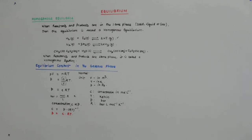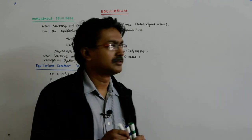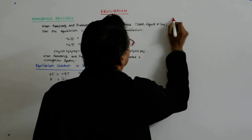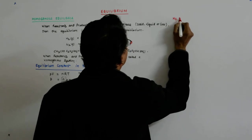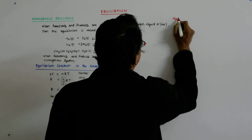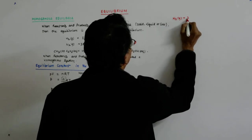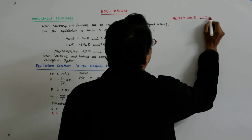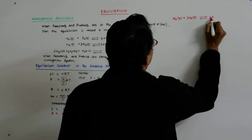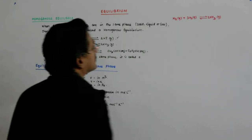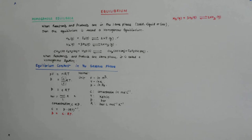So let us come to this equation: N2 gas plus 3H2 gas giving you 2NH3 gas. Pretty simple.